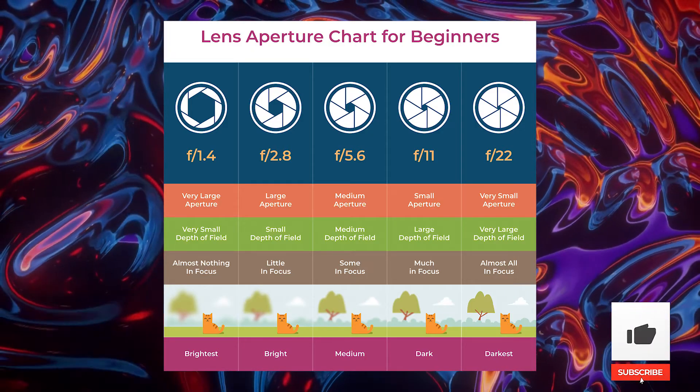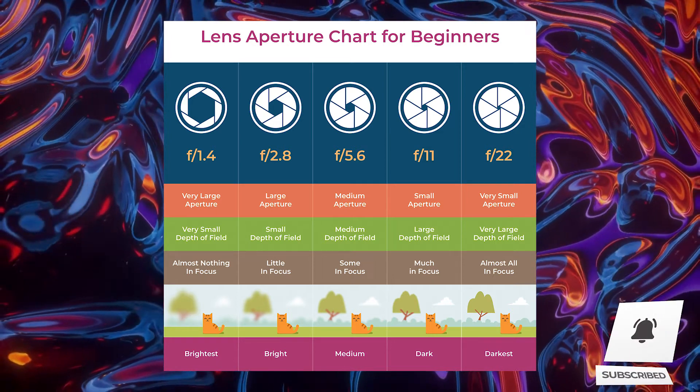A wider aperture — meaning a lower f-number or f-stop — creates more bokeh. For example, f/4 is wider than f/22. Think of it as a fraction: 1/4 is larger than 1/22, which is why people get confused when they see f/22 and f/4 on their camera. Just put 'one over' the number to understand which aperture is wider and which is narrower.